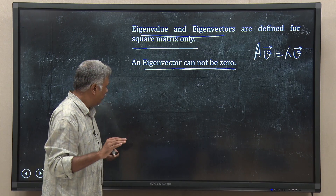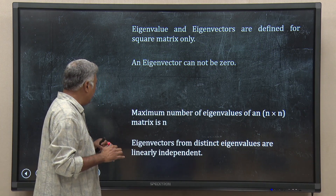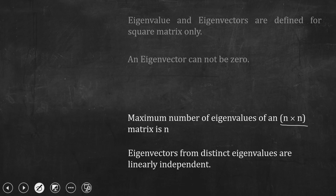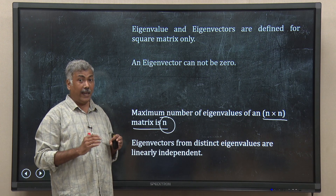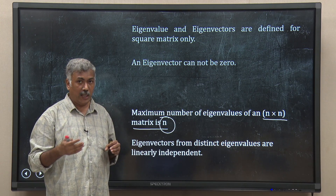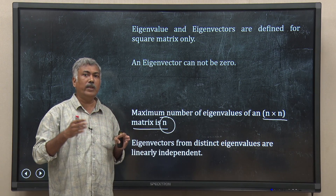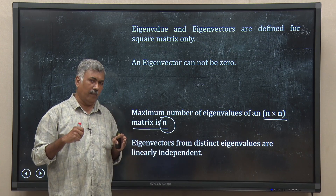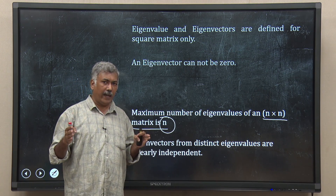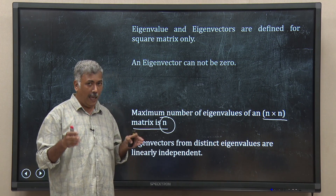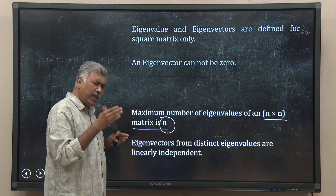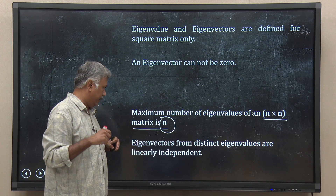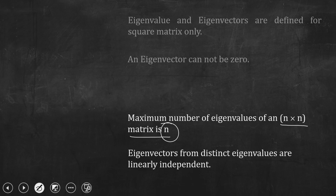If I have an n by n matrix, at maximum we can have n eigenvalues. And remember, eigenvalues can repeat — having 3 eigenvalues does not mean 3 distinctly different numbers; there can be repetition. So if I have an n by n matrix, the number of eigenvalues will be n. The interesting thing is that if you look at those n eigenvalues and find the distinct eigenvectors, the eigenvalues can repeat.